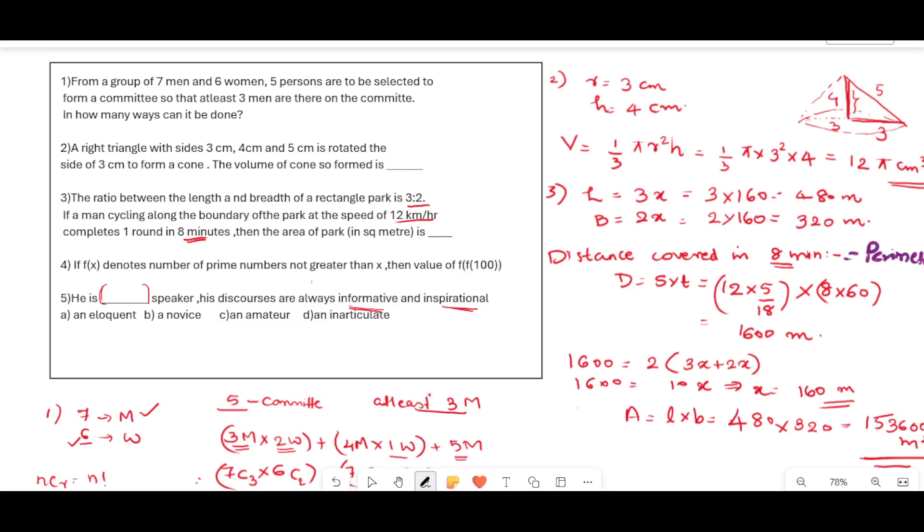So this blank should correspond to a word that is informative and inspirational. So what is the meaning of eloquent? Eloquent means fluent and impressive. The speech is eloquent, that means it is fluent and expressive. Now novice means a beginner, someone new to the field. Then amateur is a person who engages in an activity for enjoyment rather than profession. Then inarticulate means unable to express oneself clearly. So the correct word in the blank should be eloquent, that is fluent and expressive.